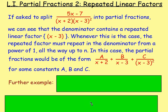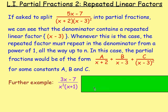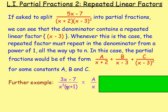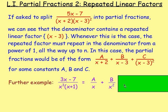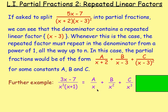The x plus 2 we would have as a over x plus 2. Because x take away 3 is repeated, we'd write it as b over (x-3) to the power of 1, plus c over (x-3) to the power of 2. For a further example, if you had 3x take away 7 over x cubed times (x+1), the x is repeated — x cubed means x times x times x. So we'd have a over x to the power of 1, plus b over x squared, plus c over x cubed. And with x plus 1, we'd just have plus d over x plus 1.